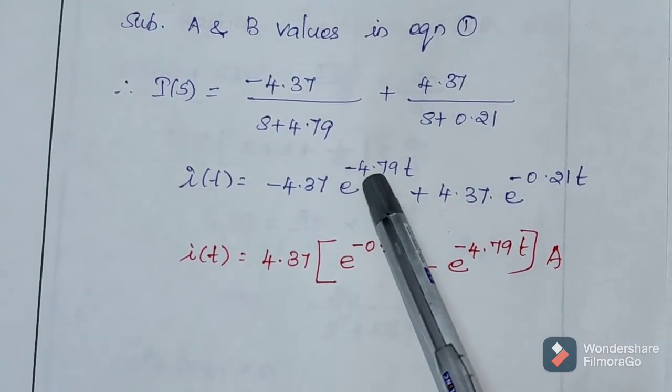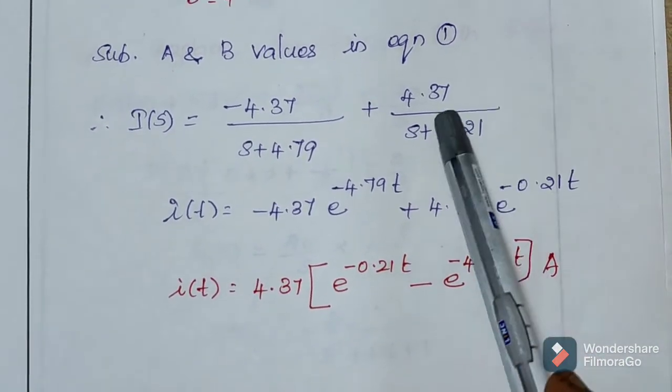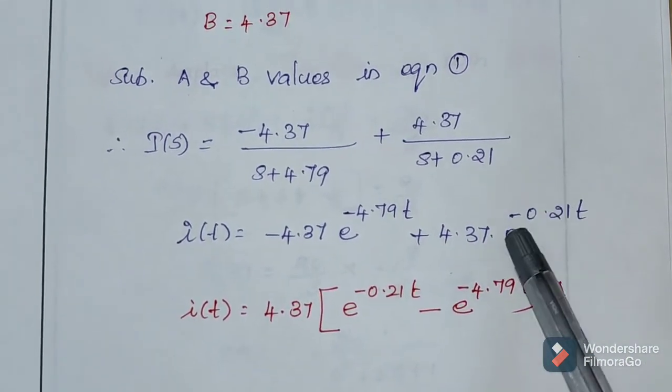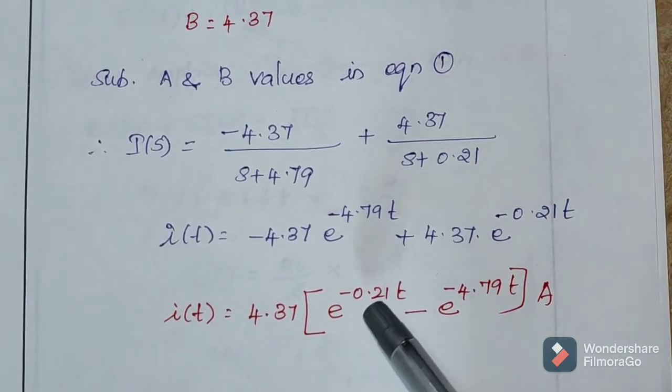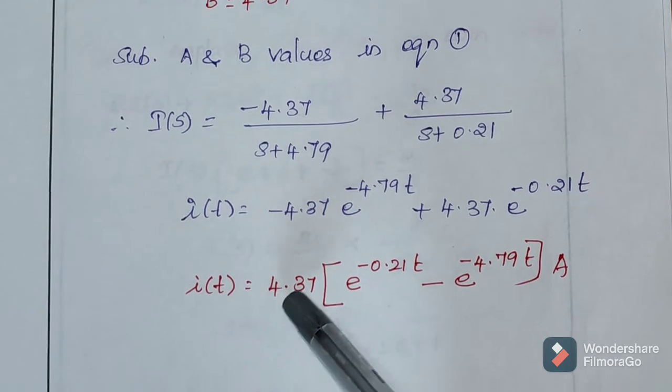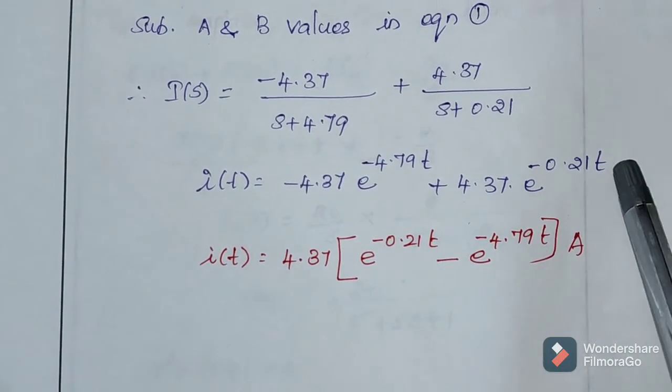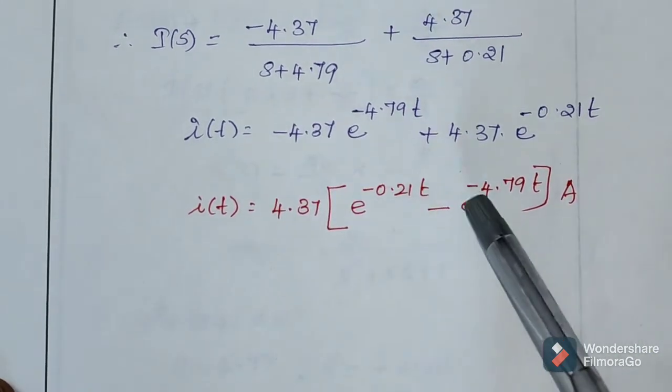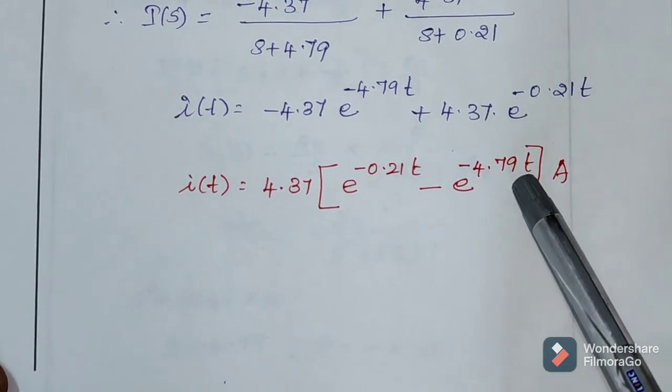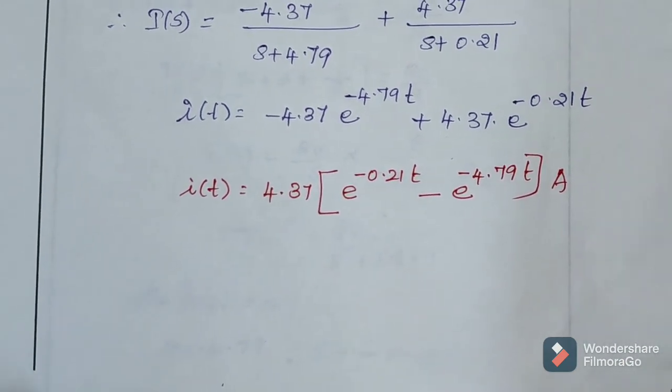Here, A is 4.79. Similarly, the Laplace transform of 1 by s plus 0.21 is e power minus 0.21 T. So, 4.37 is common, I am taking it as outside. Positive term comes first here. So, e power minus 0.21 T minus this term, second term e power minus 4.79 T and the unit for current is amperes. Thank you.